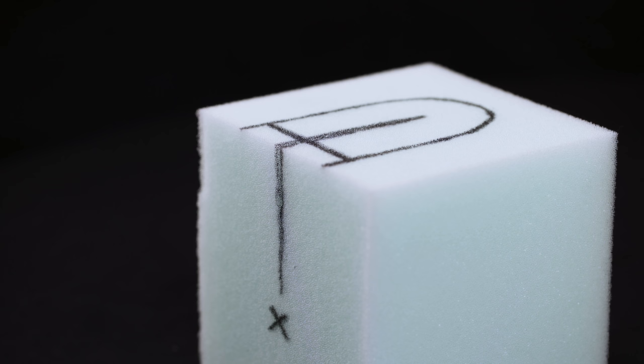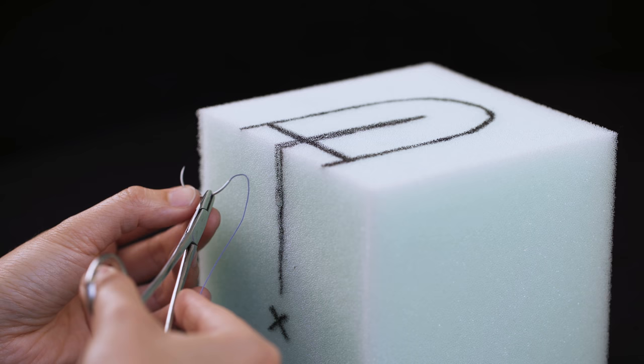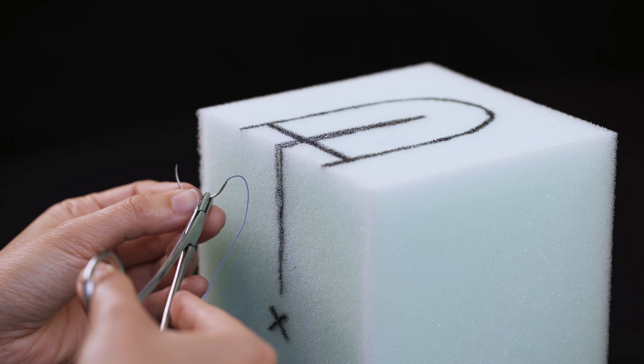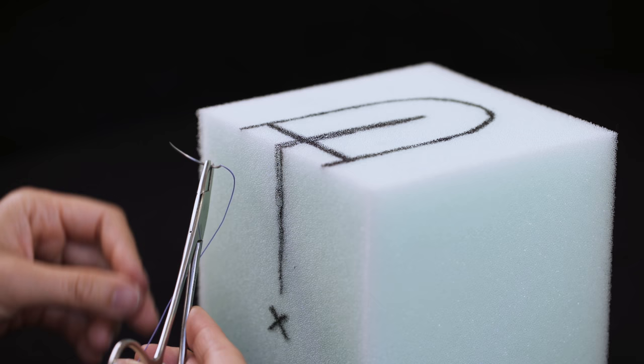Let's load the needle now. I prefer grasping the needle two-thirds to three-quarters of the way down from the tip of the needle. The closer you grasp to the tip, the more control of the needle you'll have, but you'll have less needle space to work with. I also like to angle the needle a bit past perpendicular to the axis of the needle driver. This gives me a more ergonomic position in my wrist and arm.